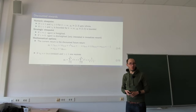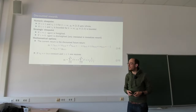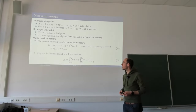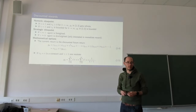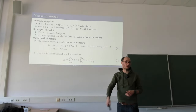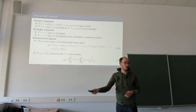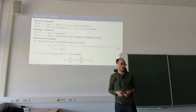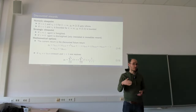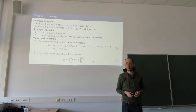We had introduced the rewards and the returns, which were one central element of our reinforcement learning optimization loop with the agent and the environment. But that's only one of the items from this loop, and we want to discuss the other items of the loop more closely now.